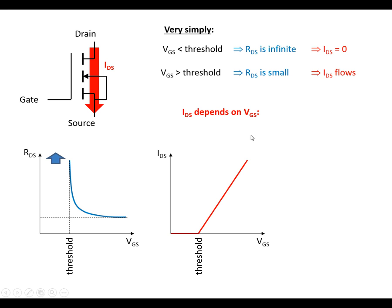Now the size of the current that's flowing depends on the gate source voltage, as you can see in the graph here. So we're going to look a bit more detail of this.